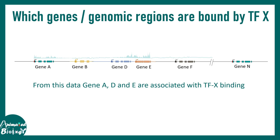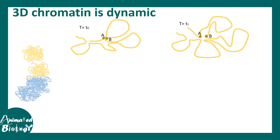By looking at where these binding sites appear across the entire genome, one can see that the transcription factor is bound at genes A, D, and E, for example. You can also determine where each peak is located — upstream or downstream. For example, a peak located upstream to gene E but within gene D might be an enhancer. This is how one can obtain a high-throughput understanding of enhancer elements across the genome.